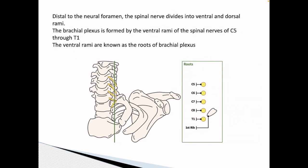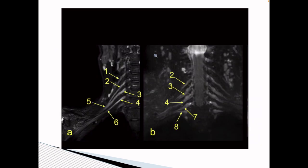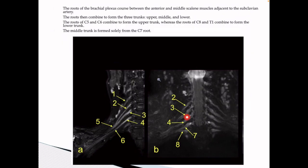Distal to the neural foramen, the spinal nerves divide into the ventral and dorsal rami. The brachial plexus is formed by the ventral rami of the spinal nerves of C5 to T1. The ventral rami are also known as the roots of the brachial plexus. This is the coronal T2-STIR image showing the roots of the brachial plexus. We can identify the T1 nerve root by its passing inferior to the first rib. The C8 nerve root passes above it, above it is C7, C6, and the C5 nerve root.